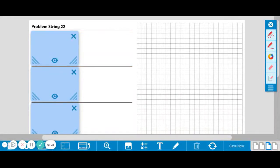Hi 5th grade! Today we're working on problem string 22 for March number corner. If you do not have a piece of notebook paper and a writing utensil, go ahead and pause and grab that and then press play when you're ready.